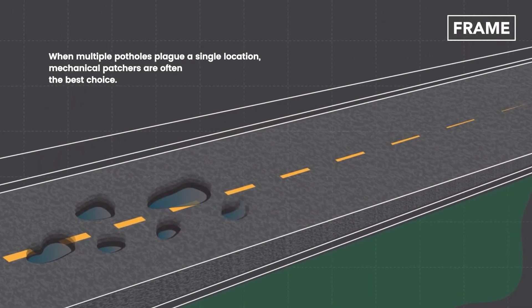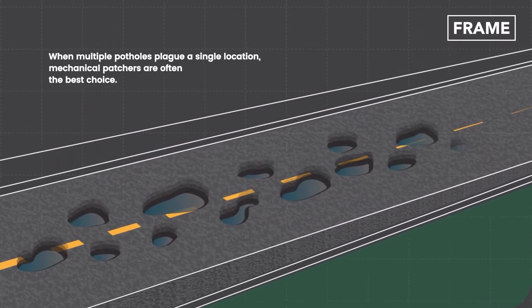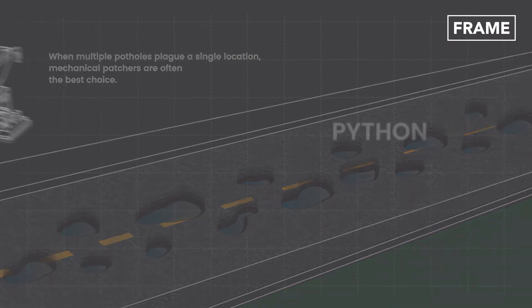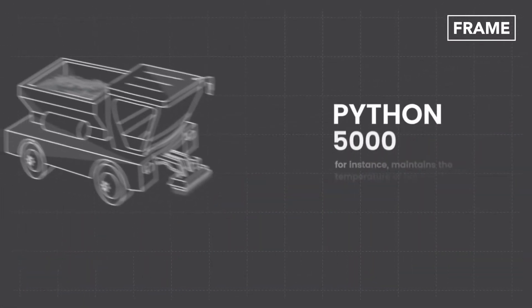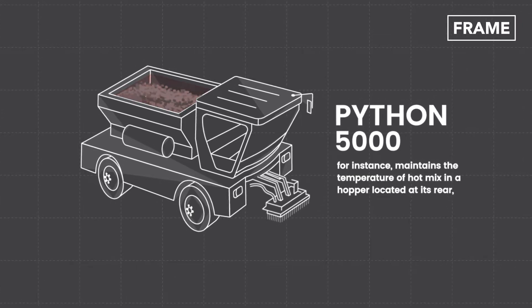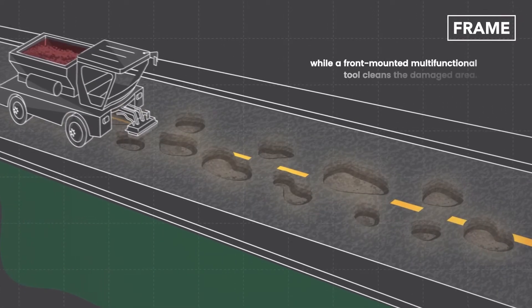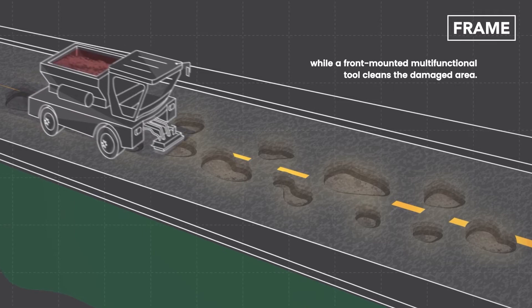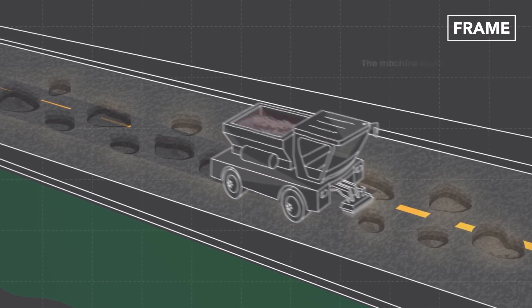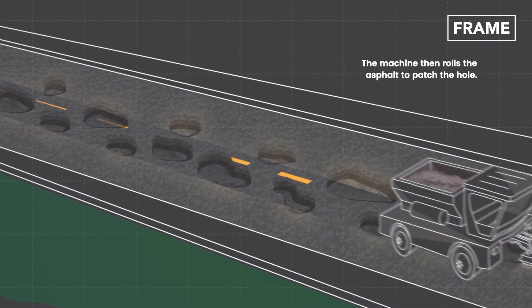When multiple potholes plague a single location, mechanical patchers are often the best choice. The Python 5000, for instance, maintains the temperature of hot mix in a hopper located at its rear, while a front-mounted multifunctional tool cleans the damaged area. The machine then applies and rolls the asphalt to patch the hole.